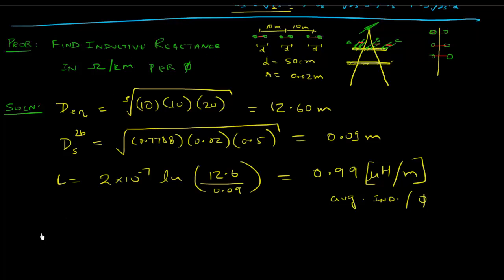We are asked to find the inductive reactance. What is inductive reactance? Inductive reactance is XL. What is this? It's omega L, which is 2πfL. Now you see the information you're missing - you're missing the frequency. So depending on which part of the world you are, its frequency is either going to be 50 hertz or 60 hertz. Where I am, it's 60 hertz in North America, so we're going to assume 60 hertz here.